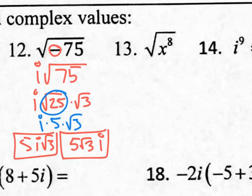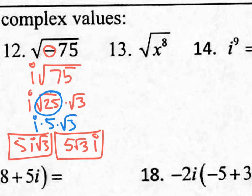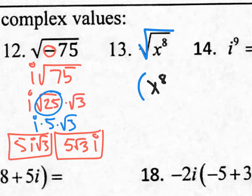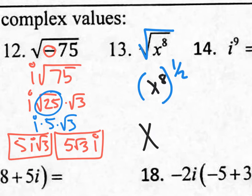Number 13. Remember, the power of 1/2 is the same thing as the square root. So the square root of x to the 8th is the same as x to the 8th raised to the 1/2 power. A power to a power — you multiply the exponents. What's 8 times 1/2? That's just 4, and you're done. Your answer is x to the 4th power.